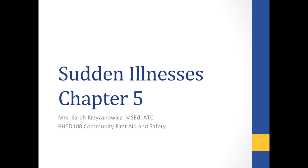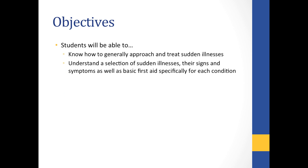Alright class, the next chapter is Chapter 5, which covers sudden illnesses. In this chapter we're going to talk about a variety of different conditions. If you're able to understand these illnesses, you'll hopefully be able to identify them if you ever come in contact with them. You may not always know the specific condition, but it's important to know how to generally approach and treat sudden illnesses. We'll cover signs and symptoms and some basic first aid specific to each condition.